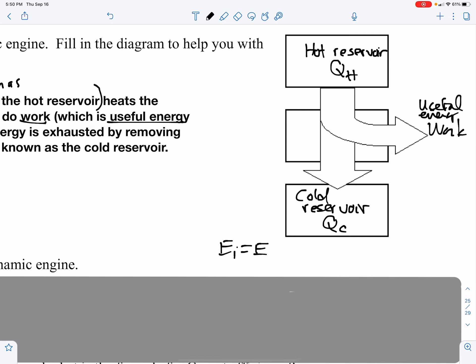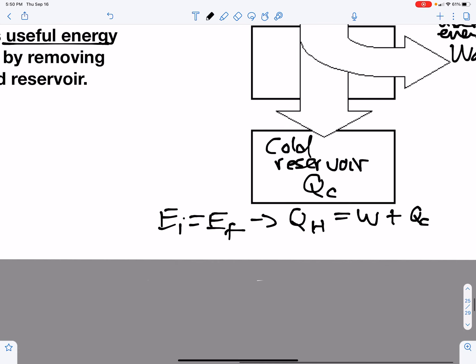According to conservation of energy, energy initial equals energy final. The initial energy would be your QH, the incoming energy, and that would be equal to the work plus the QC. That's the useful energy plus the energy exhausted. If we solve for work, the work done by a heat engine is the heat coming in minus the heat going out. That will be useful later on.